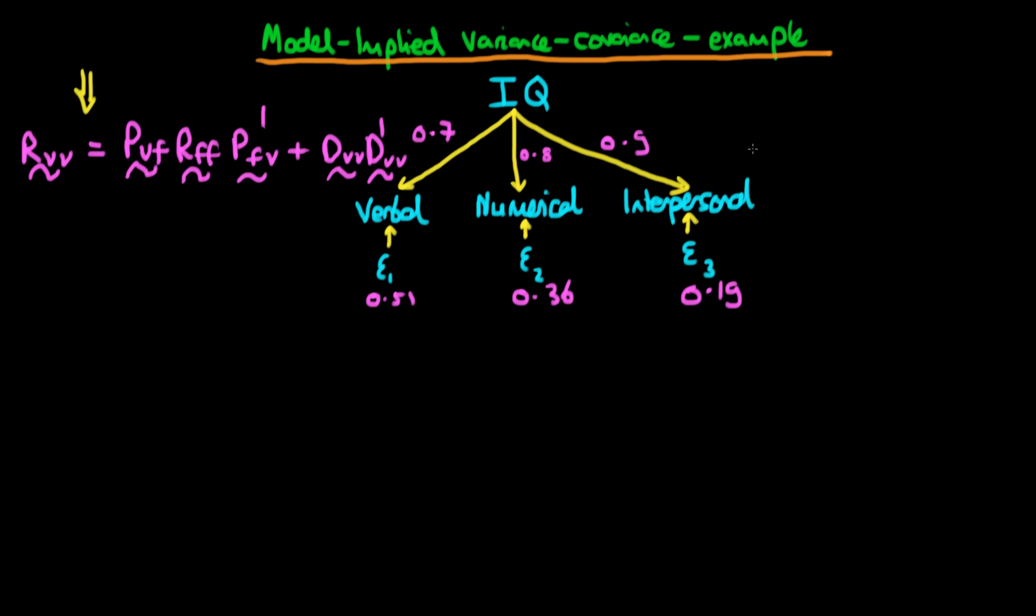Well, first of all we notice that we've only got one factor in this model, so that the matrix PVF in this example is really the same as the matrix PV1, because the number of factors we have is just one. And the idea is that what we're going to have is that every component of our matrix, which in this case is actually just going to be a column vector,